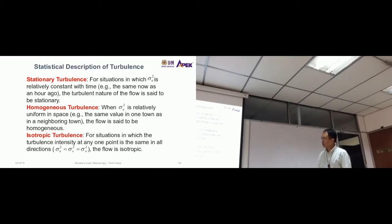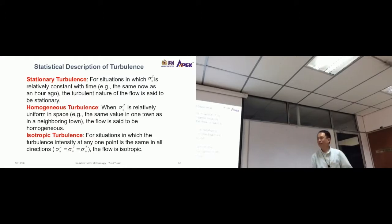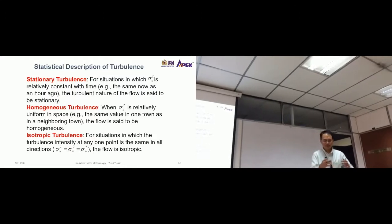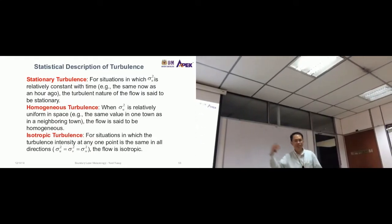So the second type of turbulence is homogeneous turbulence. When sigma u-square is relatively uniform in space, the same value in one town as in a neighboring town, the flow is said to be homogeneous. So stationary means it does not change with time, one sensor. Homogeneous means that one location has the same turbulence as another location.